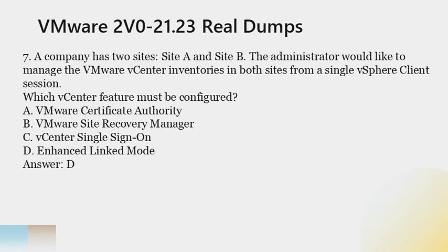Question 7. A company has two sites, Site A and Site B. The administrator would like to manage the VMware vCenter inventories in both sites from a single vSphere client session. Which vCenter feature must be configured? A. VMware Certificate Authority. B. VMware Site Recovery Manager. C. vCenter single sign-on. D. Enhanced linked mode. Answer: D.